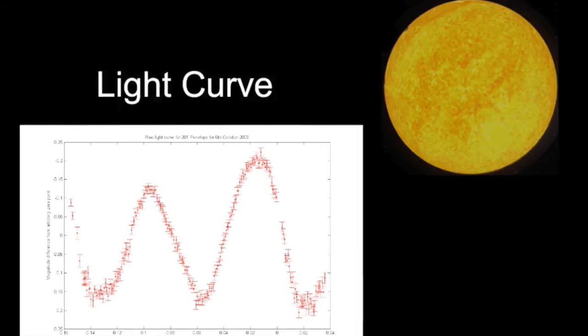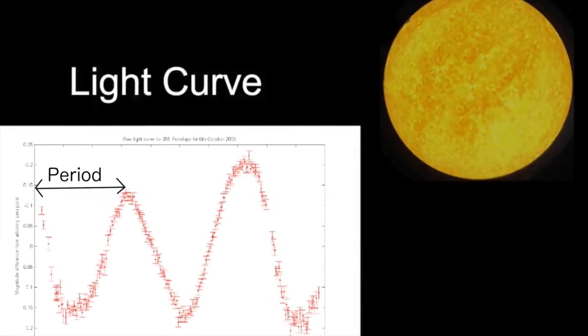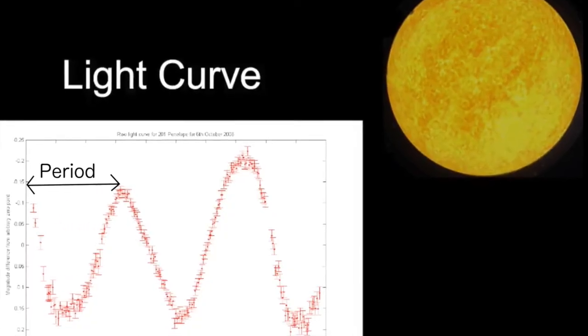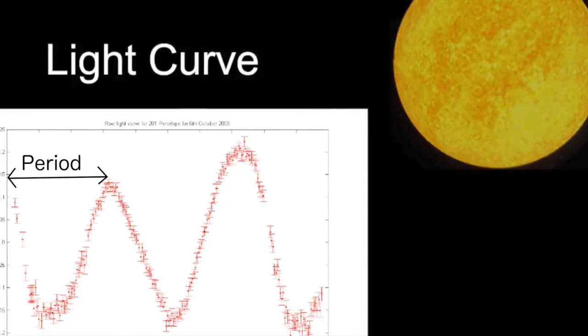The amount of time it takes for a Cepheid variable to pass through one full cycle on the light curve is called the period. The periods of Cepheids have a unique trait that separates them from other variables, which is what Henrietta Leavitt discovered back in 1912.